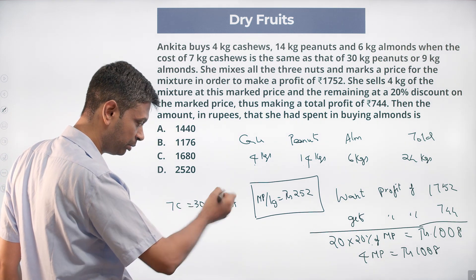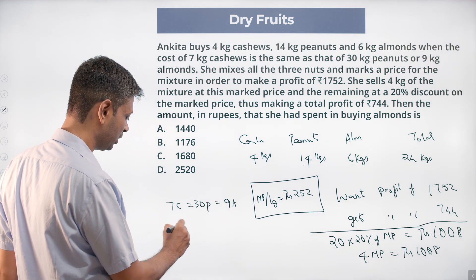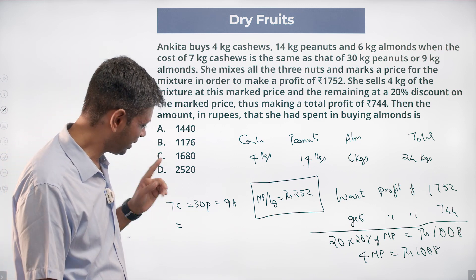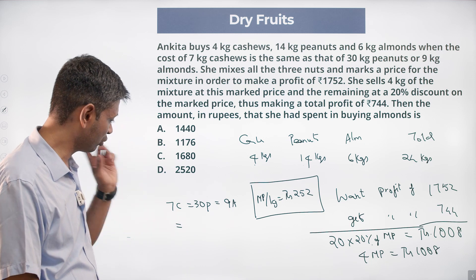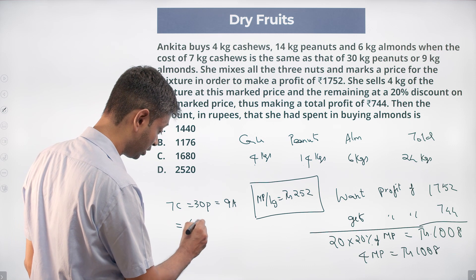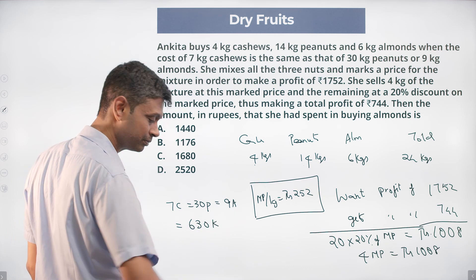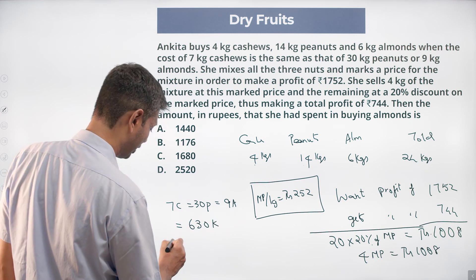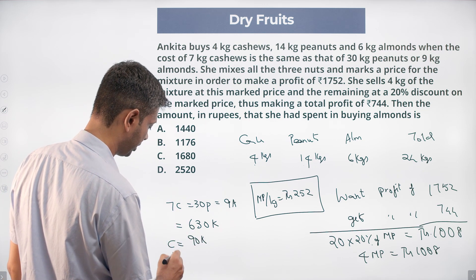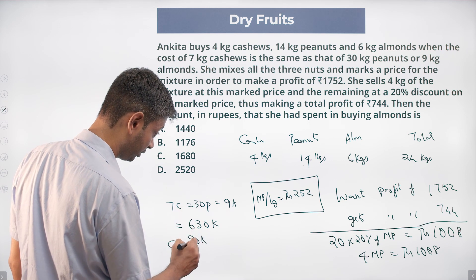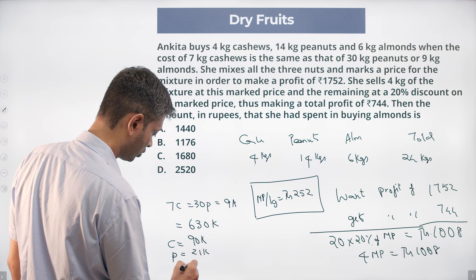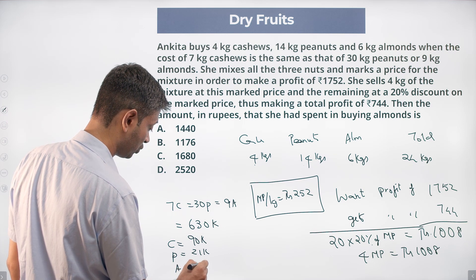7C equal to 30P equal to 9A. I'm going to make this equal to some other number to get the ratio. Seven and thirty are coprime, seven into thirty is 210, another three here takes us to 630. I'm going to call this equal to 630K. So C, price of cashew, 630 by 7, 90K. Price of peanuts, 630 by 30, 63 by 3, 21K. Price of almonds, 630 by 9, which is 70K.